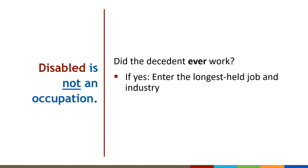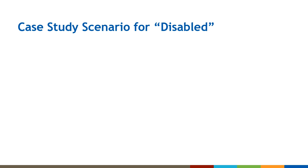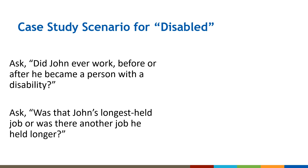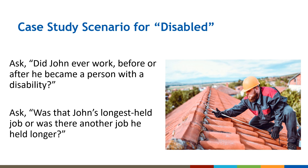Disabled is not an occupation. Many people with disabilities have jobs. Probe further and ask if the decedent ever worked. If they worked before or after they were disabled, enter the longest-held job and the industry. If no job was ever held, enter never worked. In this scenario, you are told the decedent was disabled and not working. Ask: had the decedent ever worked before or after he became a person with a disability? They respond that he was a roofer until he fell from a scaffold and was then disabled for the rest of his life. Ask whether roofing was his longest-held job or if there was another job held longer. You find out he was a roofer for a residential home builder most of his life. Roofer is his occupation and home construction is his industry.